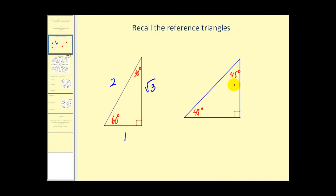For the 45-45-90 right triangle, we can label the two legs one and the hypotenuse square root of two.